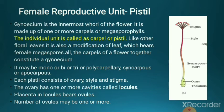The ovary forms ovules. It may be single-chambered, called monolocular or unilocular, or contain many chambers, called multi-locular. Inside the ovary, placenta bears ovules, and in each locule there may be one or many ovules developed.